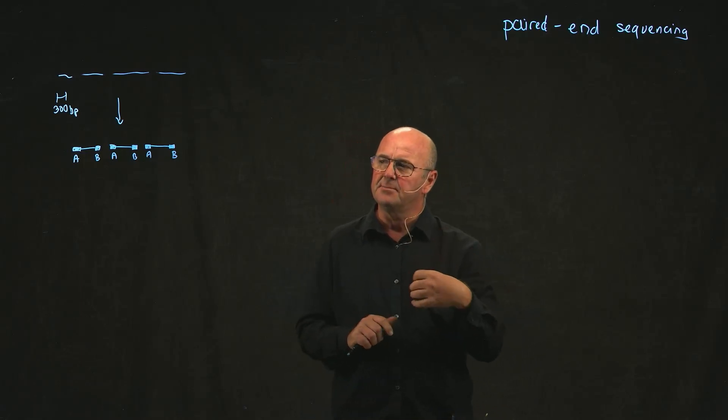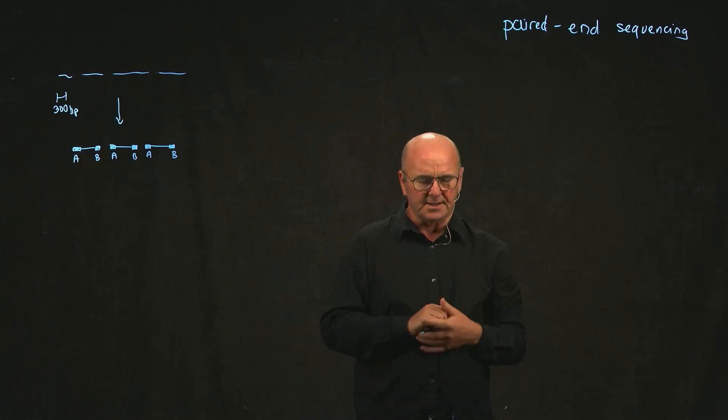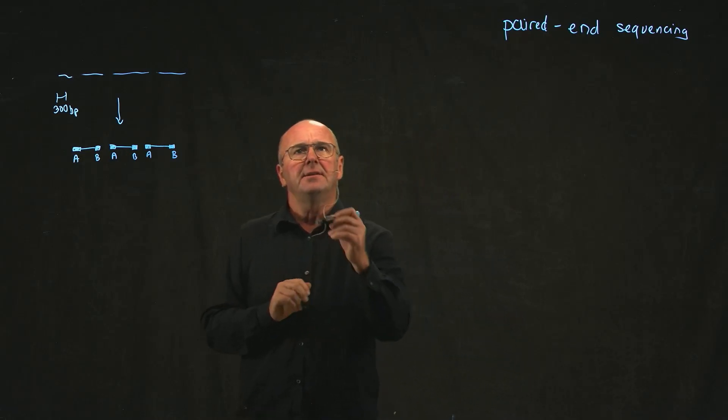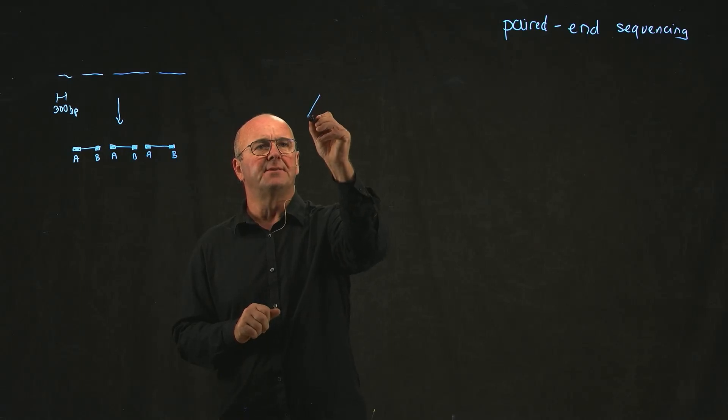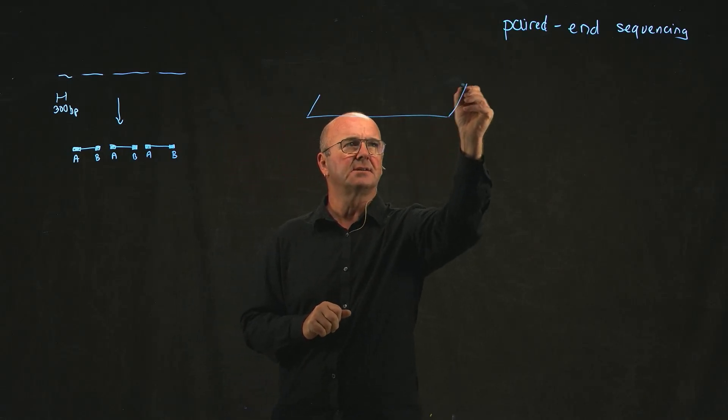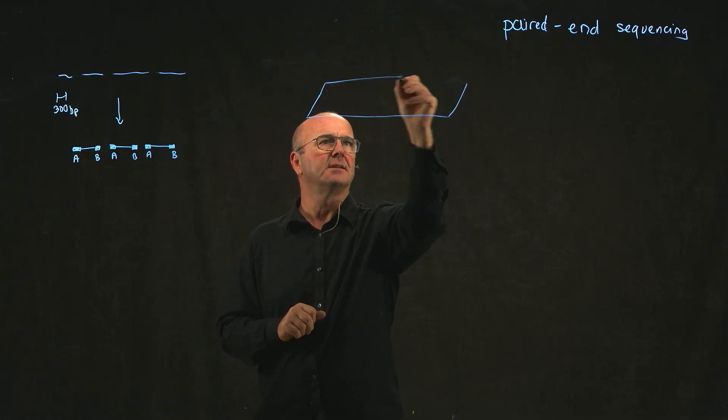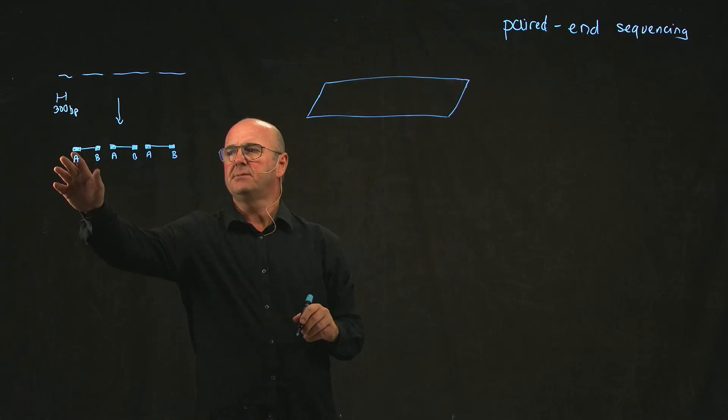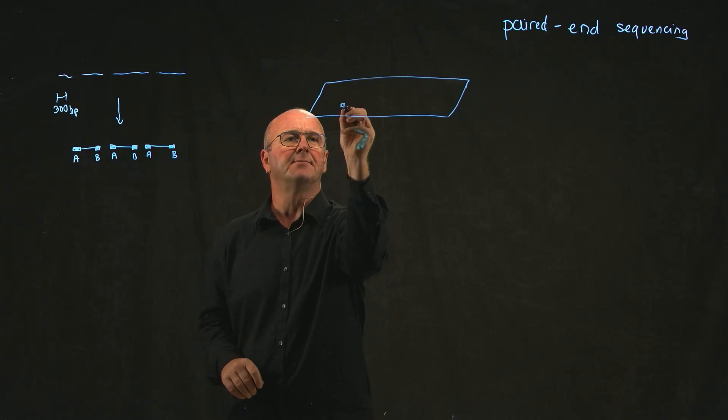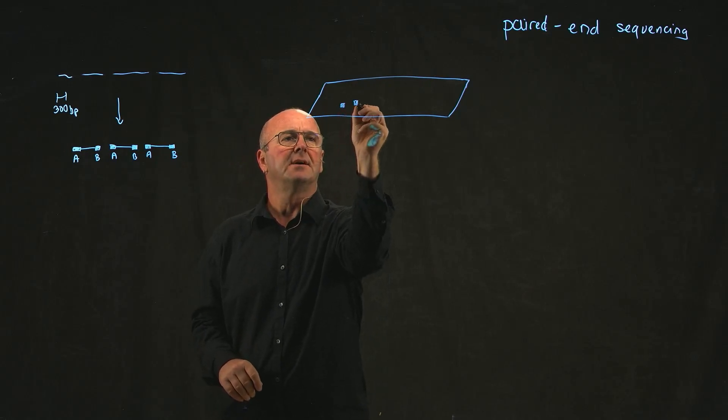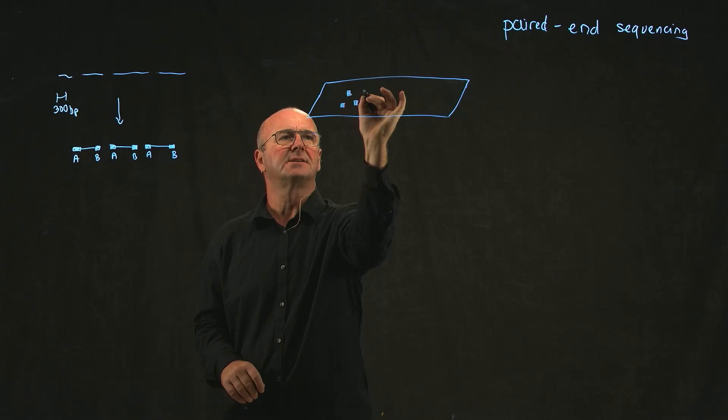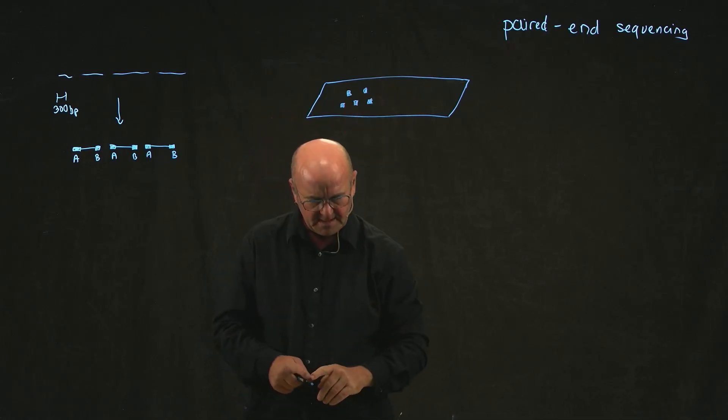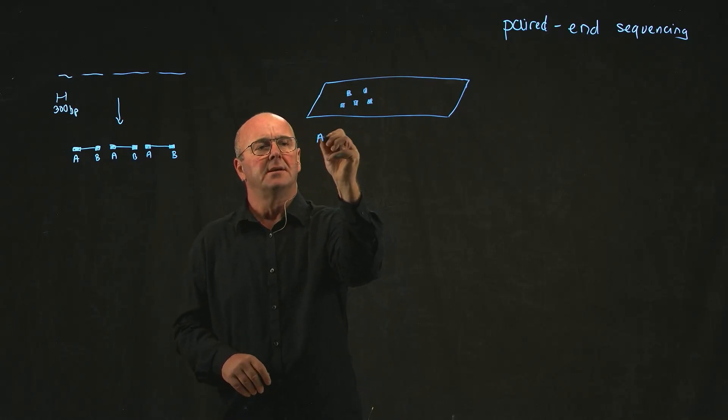And there's a step where you can purify sequences that have A's on one end and B's on the other, so we get all the sequences that have an A and then a B, different adapters on different ends. Now on the Illumina sequencing platform we use a glass slide, which is kind of like a microscope slide.